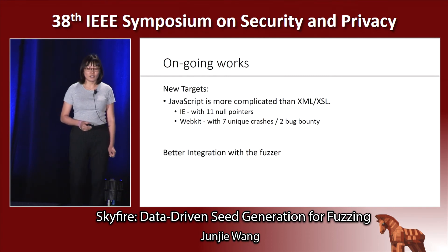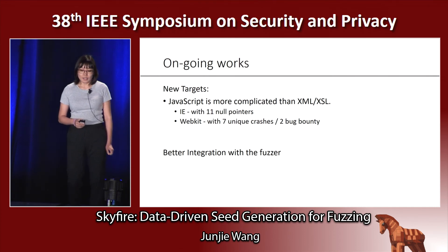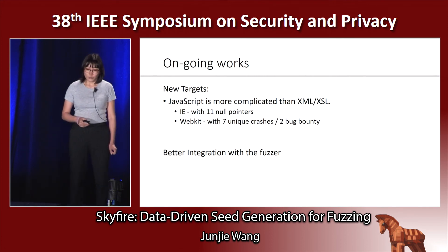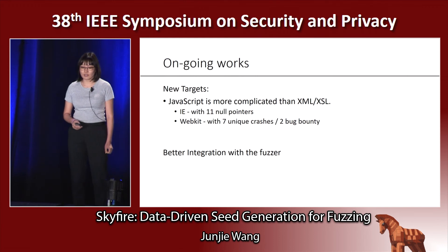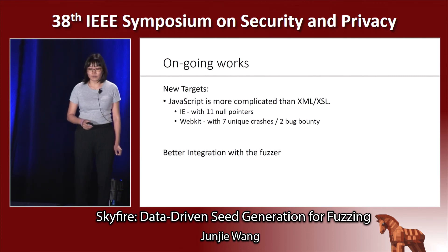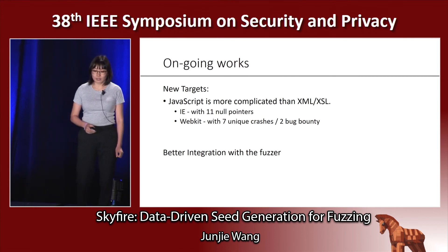We also tested JavaScript to evaluate our approach. JavaScript is more complicated than XML and XSL. We tested IE for two months and found 11 null-pointer dereference bugs. We also started to test WebKit, and up to now we have already found seven unique crashes and received two bug bounties.